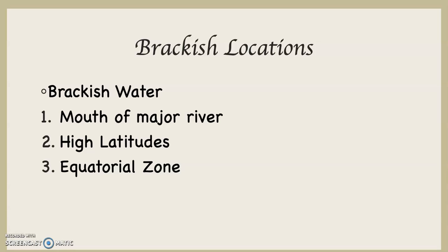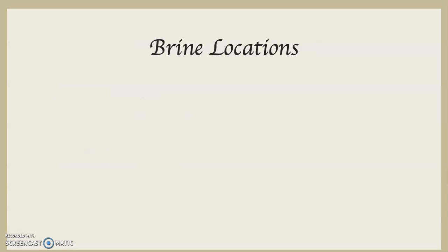The last brackish location is in the equatorial zone. At the equator it's hot, and hot air holds more water. Additionally, the equator is dominated by the equatorial low pressure zone, which means converging rising air, clouds forming, and precipitation falling. Because it's hot, there's lots of precipitation, and all of that precipitation dilutes the global ocean along the equator through freshwater infusion from rain.